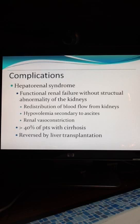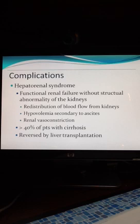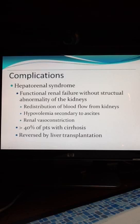Another complication of cirrhosis is hepatorenal syndrome, which is a form of renal failure. The exact cause is unknown, but there is a functional renal failure without any structural abnormality of the kidneys. It is thought to be related to redistribution of blood flow from the kidneys to peripheral and splanchnic circulation, or due to hypovolemia secondary to ascites, which promotes renal vasoconstriction. It happens in more than 40% of patients with cirrhosis, but when the liver is transplanted, the kidney failure will reverse.